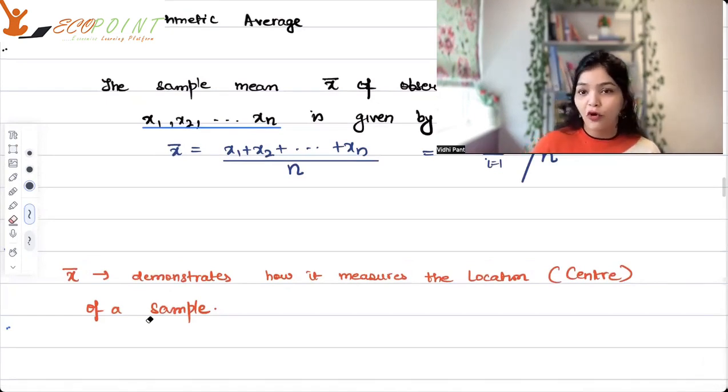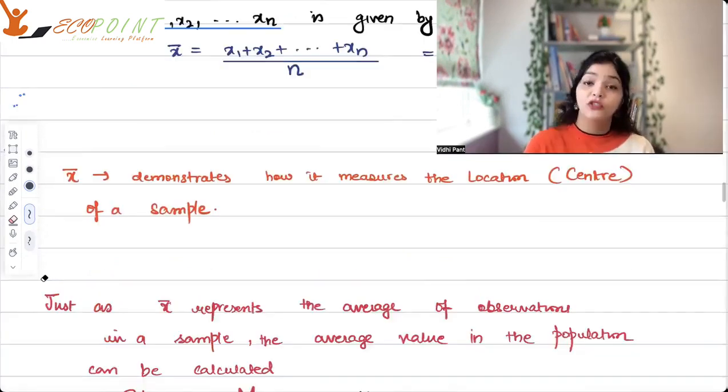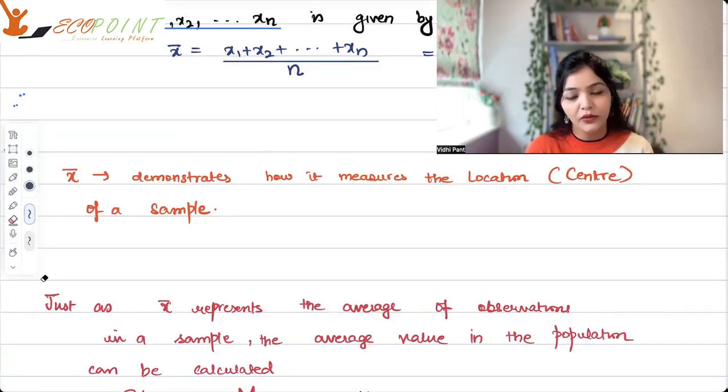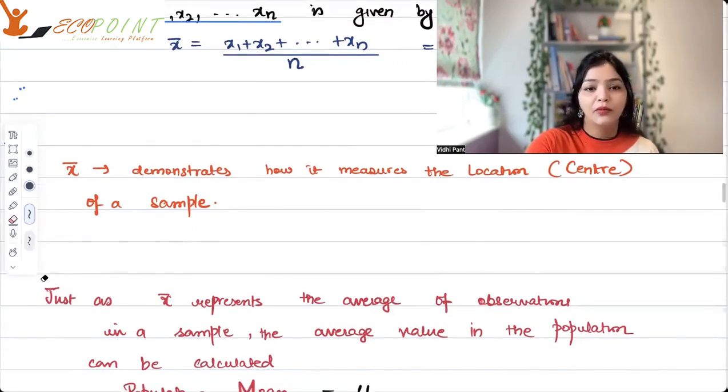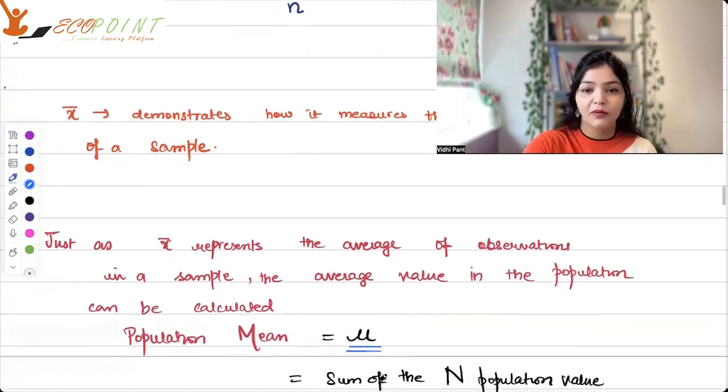For example, there is x bar. Of course, you can also talk about the population mean. That is, mean of a particular population. Just as x bar represents the average of observations in a sample, the average value in the population can also be calculated. It is generally given as population mean. And we take the Greek letter mu for it. Mu represents population mean. x bar represents sample mean. This thing I have told you in the last lecture.